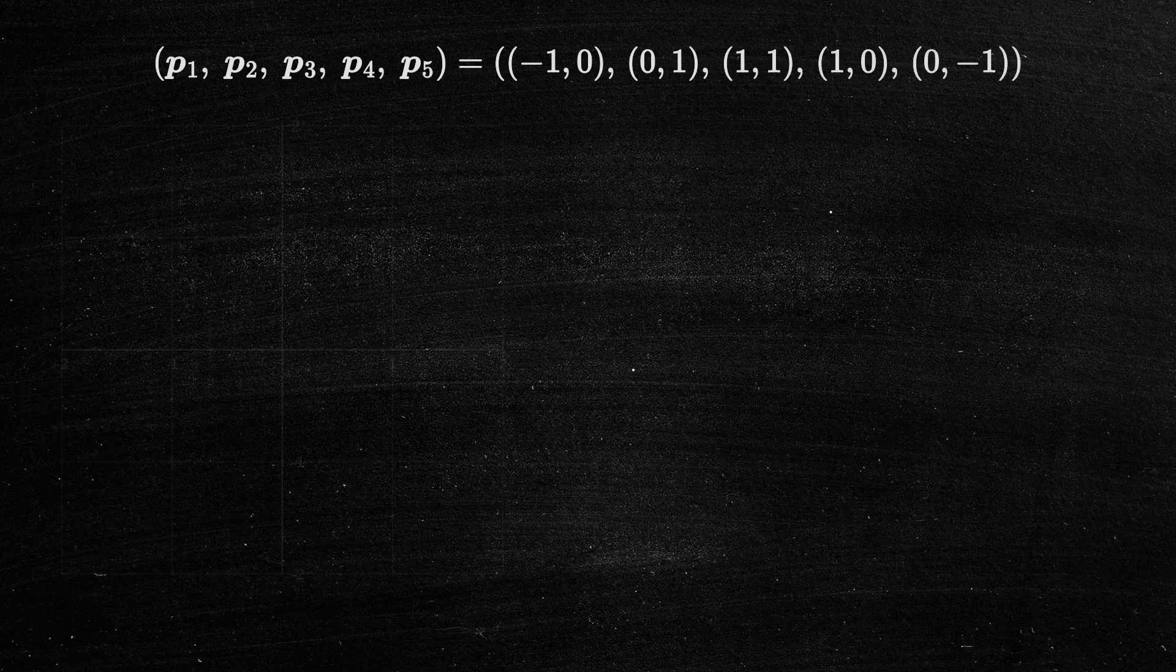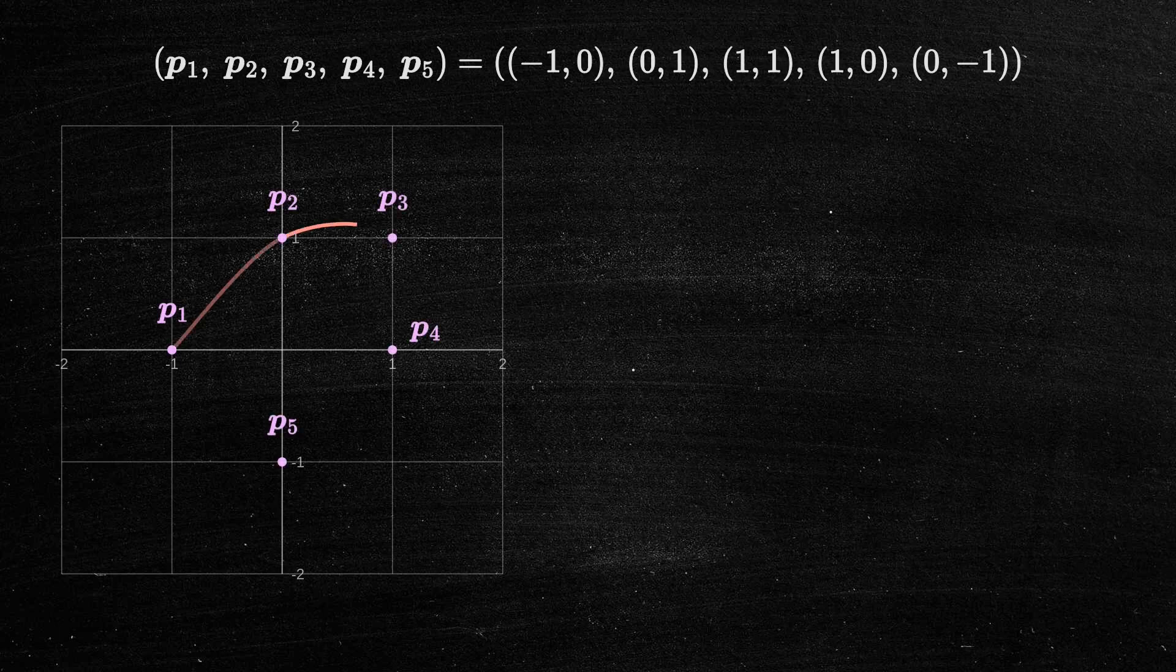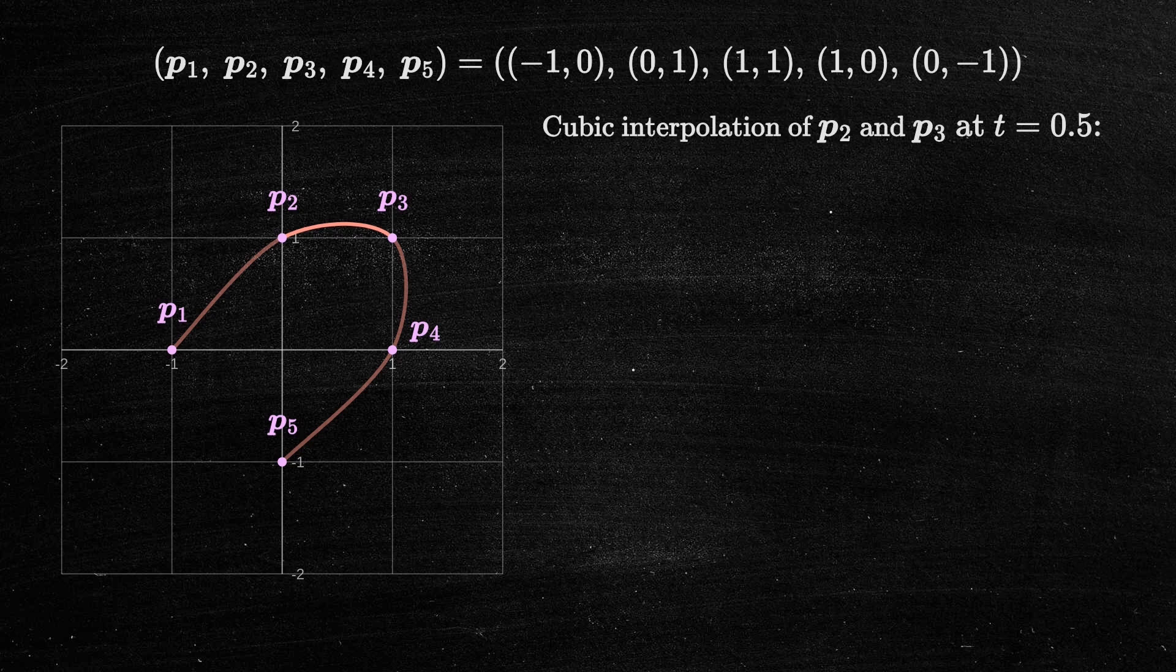For example, let's consider this list of 2D points. We can interpolate between points p sub 2 and p sub 3. For instance, if we want to find the value at t equals 0.5 between them, we can calculate it as follows.